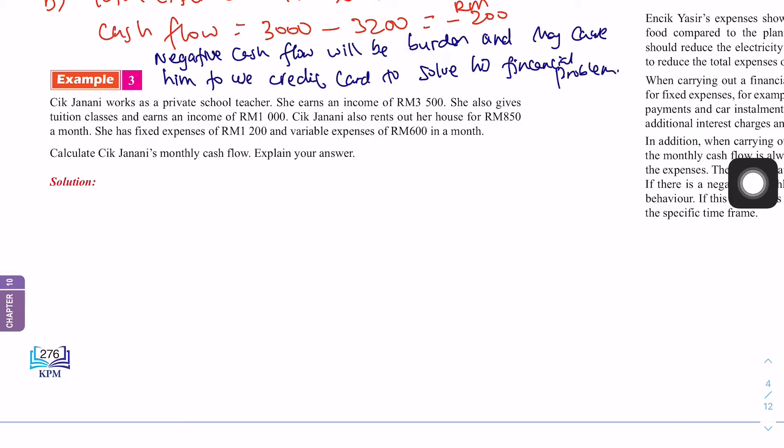So far, it sounds quite good. So, cash flow. Total income, they have RM3,500 plus RM1,000 from the tuition and from the house rent. So, RM850 minus her expenses is RM1,200. And RM6,100. Bila kita selesaikan, we will get RM3,550. So, this is a positive cash flow.